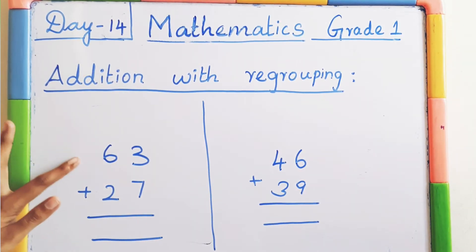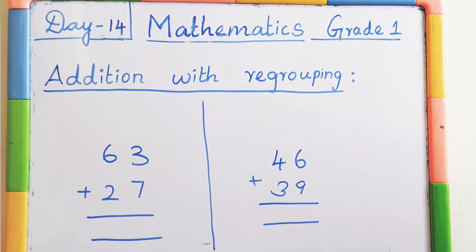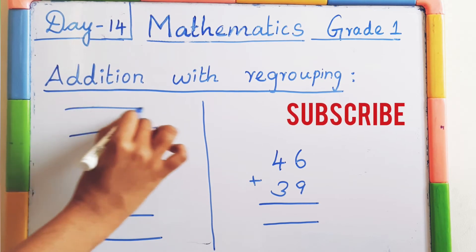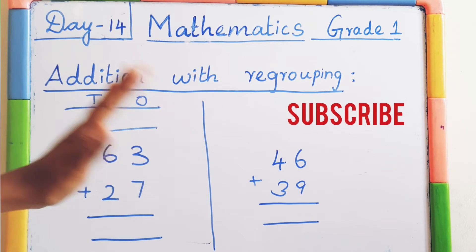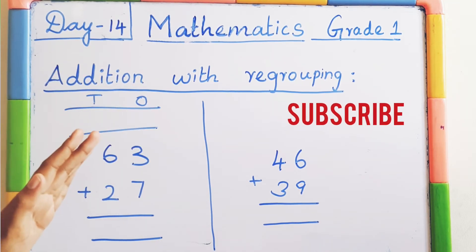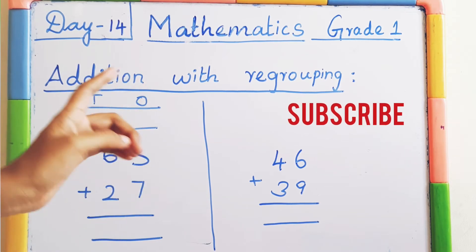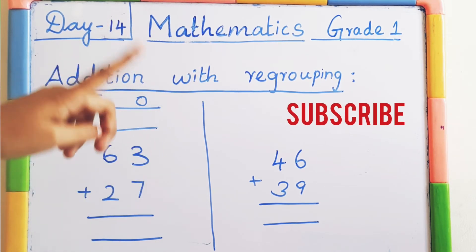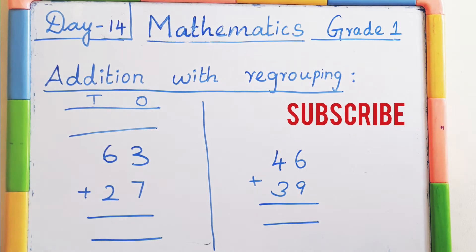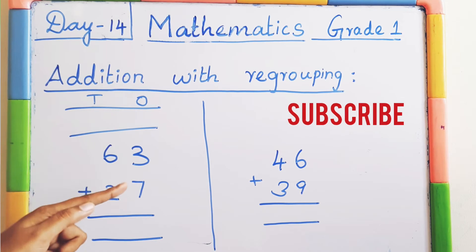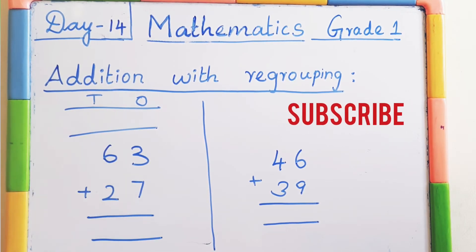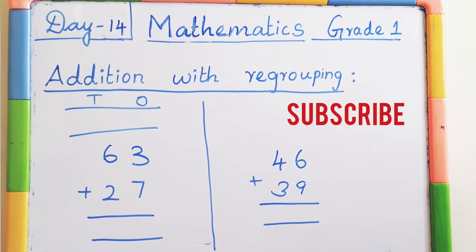See this sum: 63 plus 27 equals dash. First step: write ones and tens. If it says regrouping or carry over addition, both are the same. For regrouping addition, allot the space like this. In addition, you can keep any number in mind — keep the bigger number in your mind. In subtraction you cannot do that.